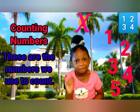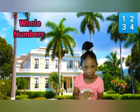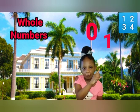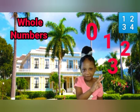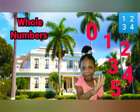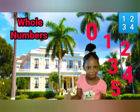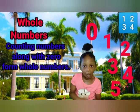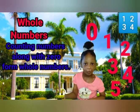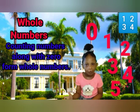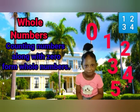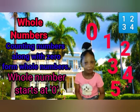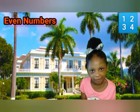We start at one. The second type is whole numbers. Zero, one, two, three, four, five — these are examples of whole numbers. Counting numbers along with zero form whole numbers. Remember, whole numbers start at zero. The next one is even numbers.